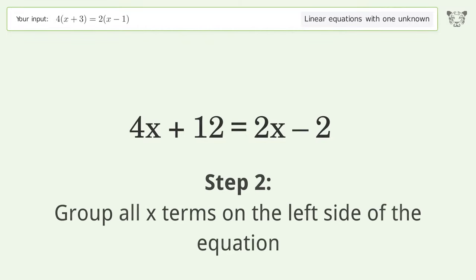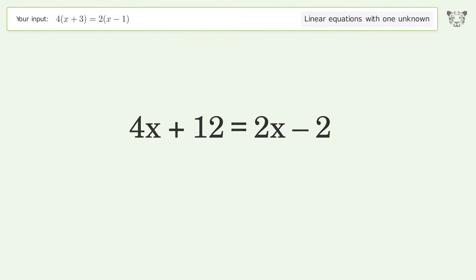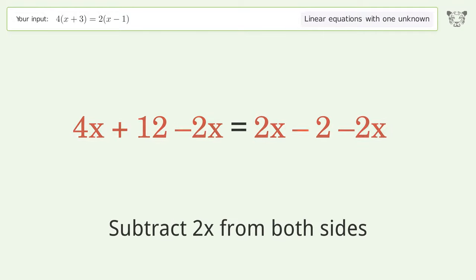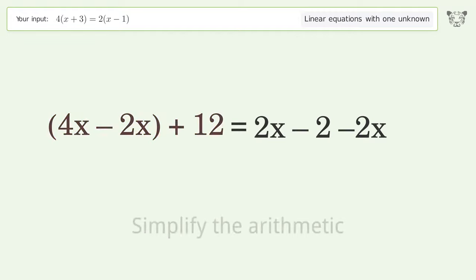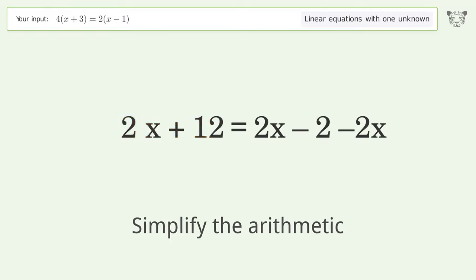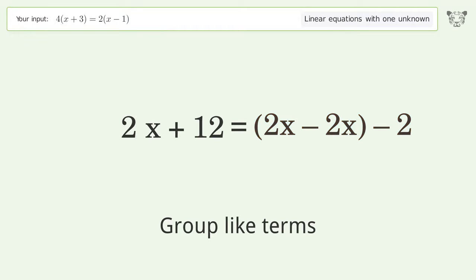Group all x terms on the left side of the equation. Subtract 2x from both sides. Group like terms. Simplify the arithmetic. Group like terms. Simplify the arithmetic.